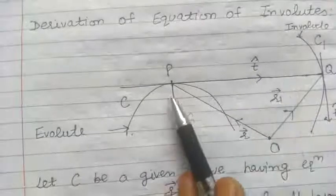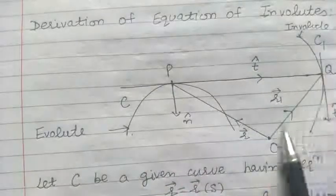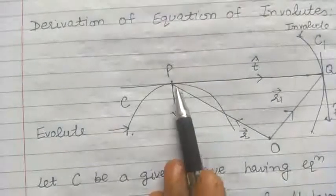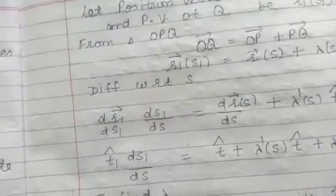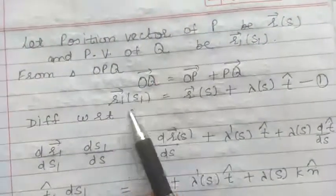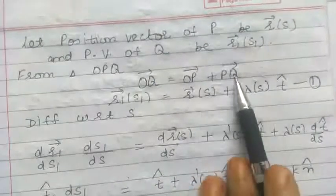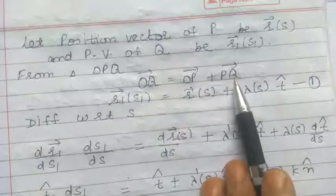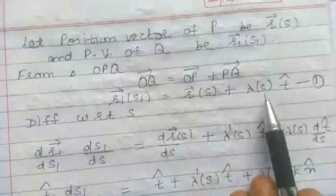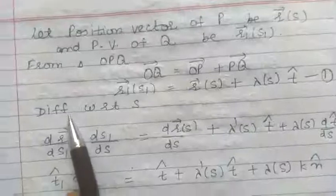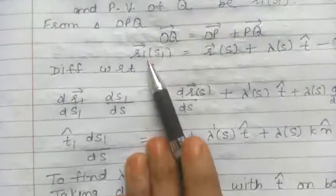Now we can use the triangle law of vector addition in the triangle OPQ. From here, the vector OQ is equal to vector OP plus vector PQ. Substituting the values: vector OQ is vector R1, vector OP is vector R, and from the figure, vector PQ is along the tangent, so we can take vector PQ as lambda times T cap.